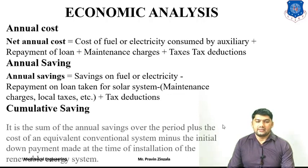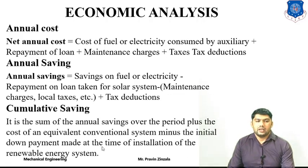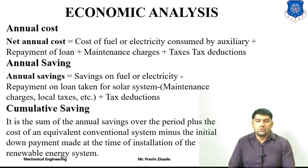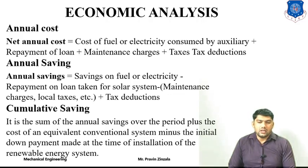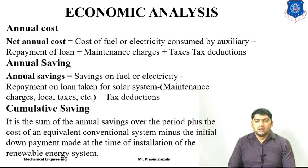Next is cumulative saving — the saving over a particular period. For example, calculating savings from installation of a solar power plant for 5, 10, or 20 years. Cumulative saving is the sum of annual savings over the period, plus the cost of equipment of the conventional system, minus the initial down payment made at the time of installation of the renewable energy source.